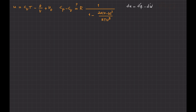So this becomes dU minus P dV, and then from this equation, if I want to calculate D-prime of Q, it becomes dU plus P dV.